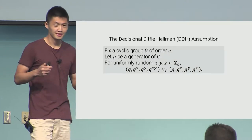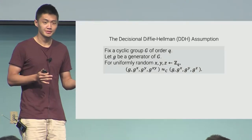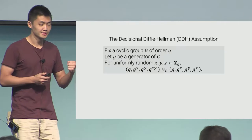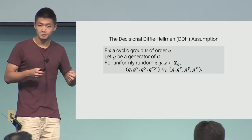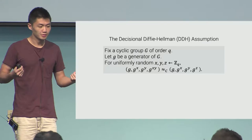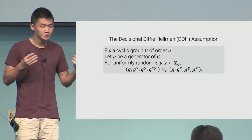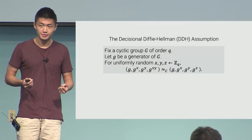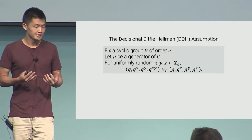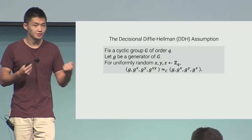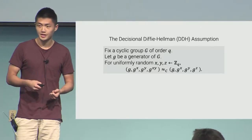I want to start by just putting up the statement of the decisional Diffie-Hellman assumption. It says that we fix some cyclic group G of order Q. Little g is going to be a generator of the group. The assumption states that for uniformly random x, y, and z from Z_Q, no computationally-bounded adversary can distinguish between seeing g^x, g^y, and g^xy, versus g^x, g^y, and g^z.